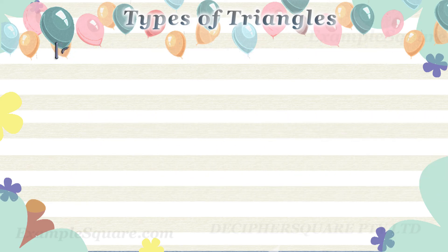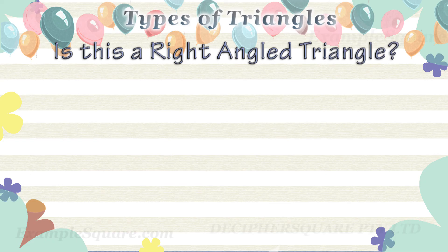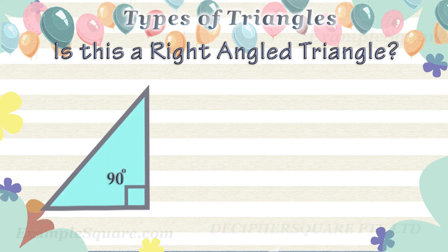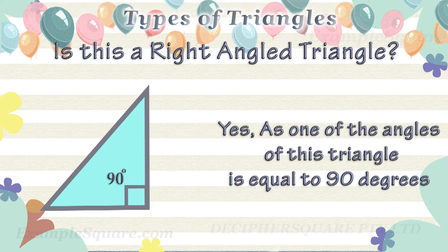Is this a right angled triangle? Yes, this triangle is a right angled triangle as one of the interior angles is equal to 90 degrees.